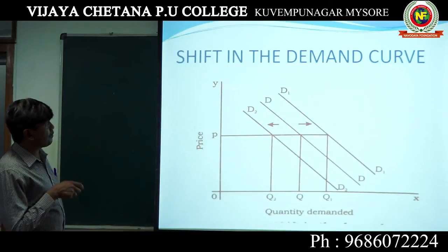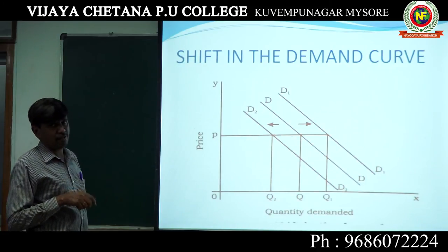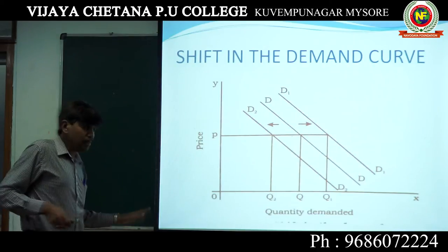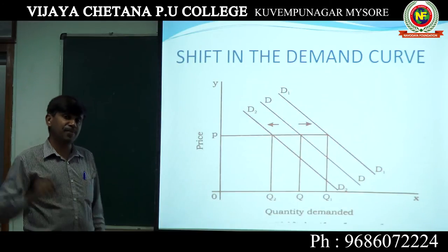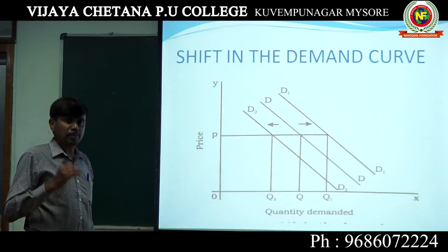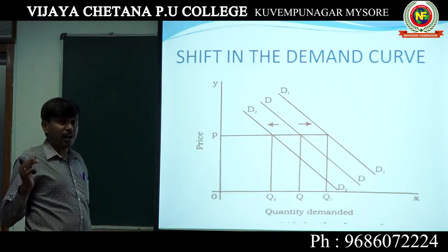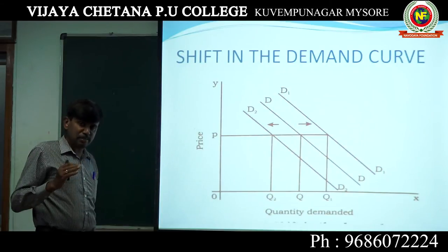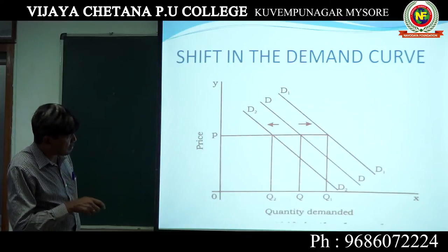Shift in demand curve. Here there is no change in price — we keep price unchanged. But other factors are changing: income, price of related goods, taste and preferences, expectations. If any change has taken place other than price, then we call it a shift in demand curve, because price remains constant. OP is the price — there is no change in price, but other factors are changing.